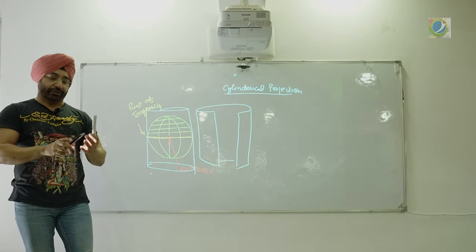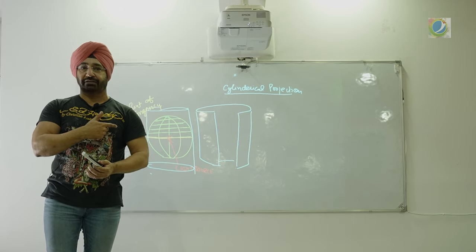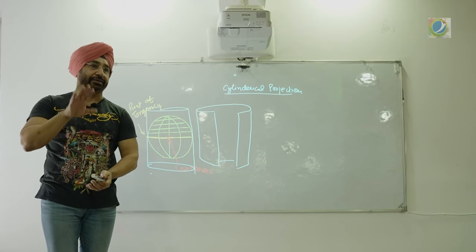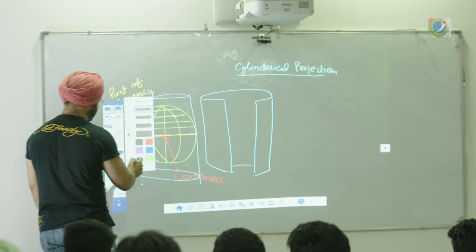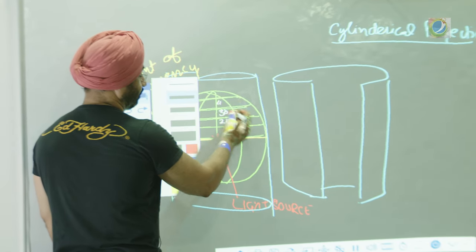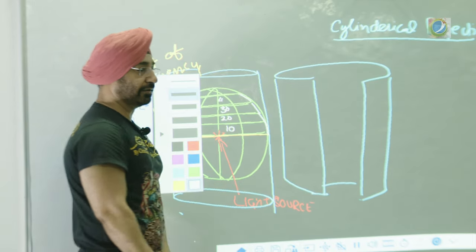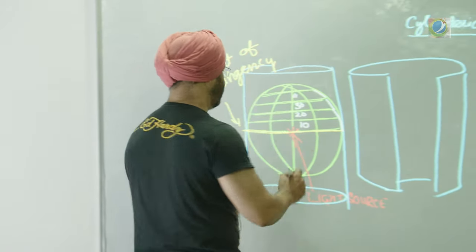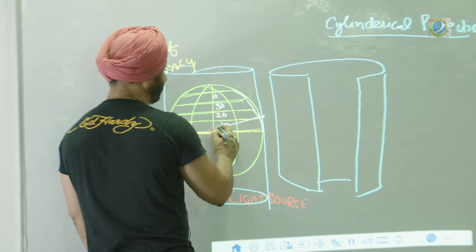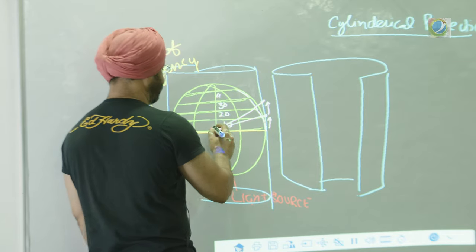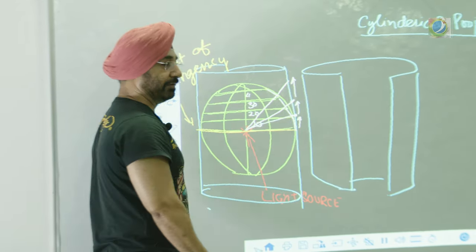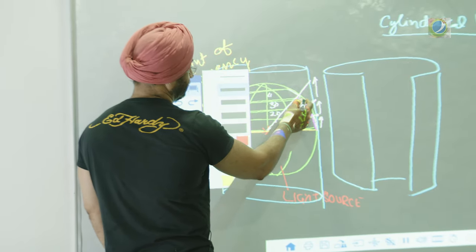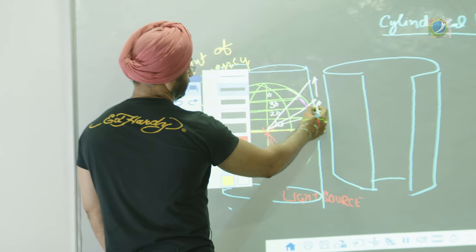Where will the scale be correct? Wherever the sheet is touching. In this projection it is touching at the equator, so there the scale will be correct. If you go away from the equator, the same area will start expanding and increasing. Let us say 10 degree north, 20 degree north, 30 degree north, 40 degree north latitude — this area is the same, but the distance from the sheet is increasing, so the projection size will continue to increase.